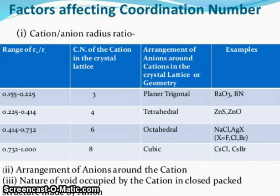Factors affecting coordination number. Cation-anion radius ratio. Range of r₊/r₋: 0.155 to 0.225, coordination number of cation in the crystal lattice is 3, arrangement of anion around the cation in the crystal lattice or geometry: planar trigonal. Examples: B2O3 or BN. 0.225 to 0.414, coordination number 4, tetrahedral: zinc sulfide, zinc oxide. 0.414 to 0.732, coordination number 6, octahedral: sodium chloride, silver chloride, fluoride or bromide. 0.732 to 1.000, coordination number 8, cubic: cesium chloride and cesium bromide. The arrangement of anions around the cation reflects the nature of the voids occupied by the cation in close packed structure made by anions.